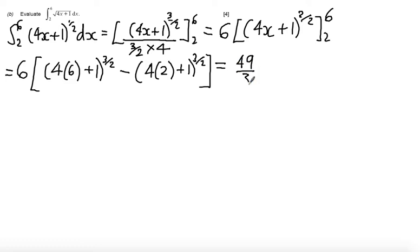So evaluating this using a calculator, we should get 49 over 3 as an exact answer, or you can give a reasonably rounded answer.